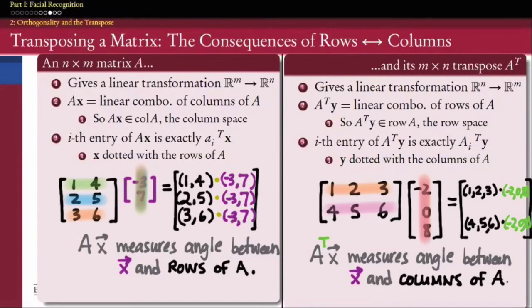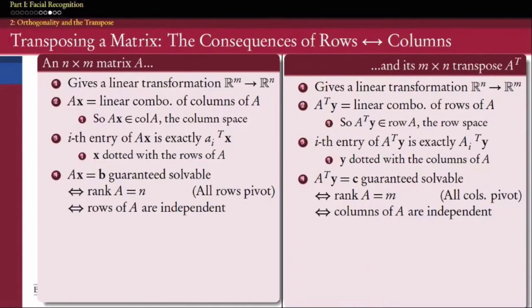Our final two facts relate to the systems of equations these matrices define and the extent to which those systems have unique solutions. Starting with solvability: a system Ax = b is guaranteed to have a solution exactly when every row of A has a pivot. Flipping that script, A transpose defines a linear system which is solvable exactly when all rows of A transpose have a pivot — which is the same as having a pivot in every column of A.